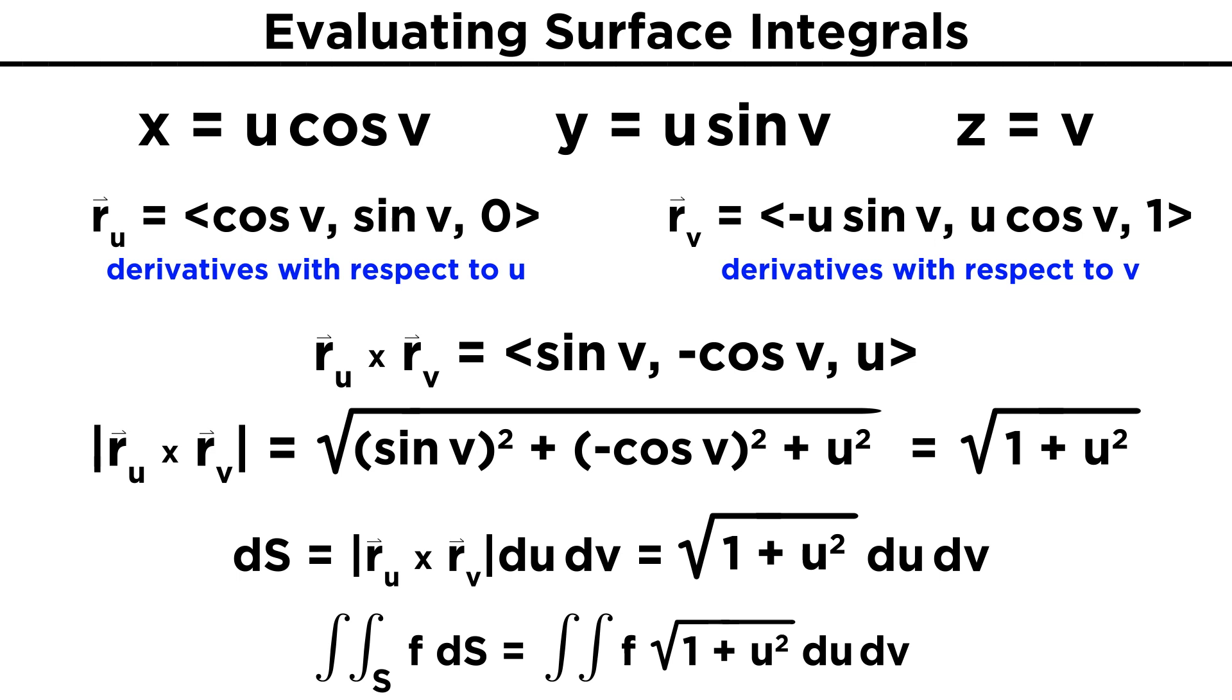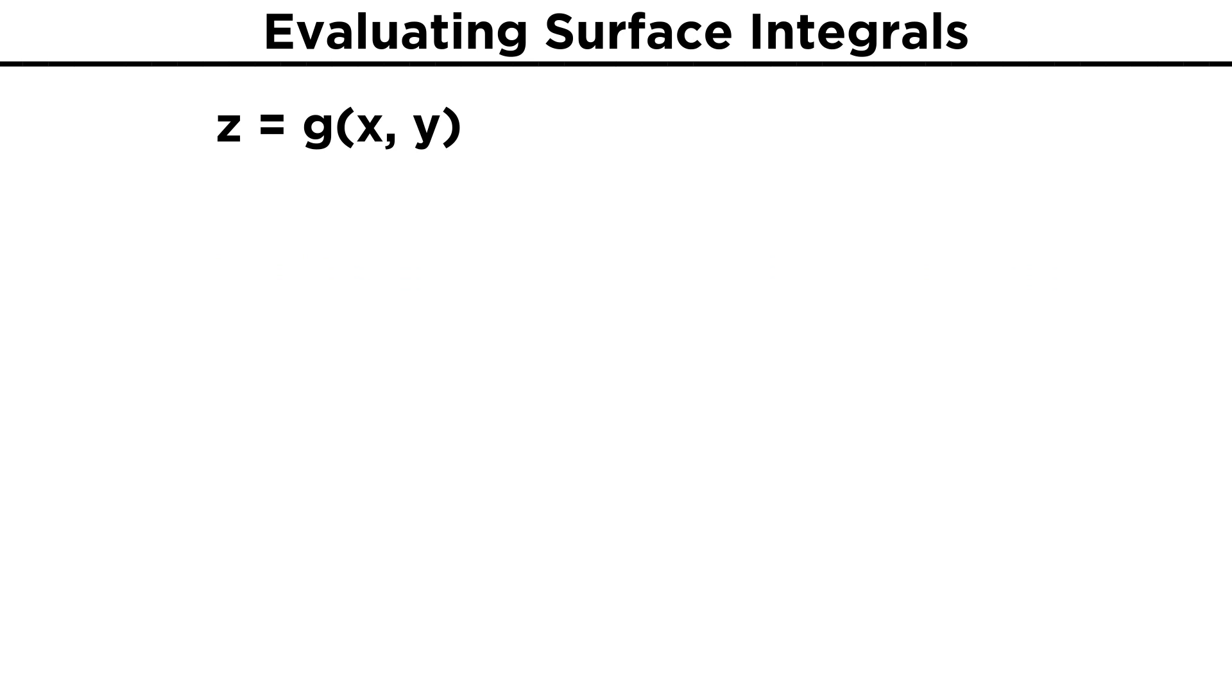This example illustrates how to set up the most general cases of surface integrals. However, there is a simplified case where the surface we are integrating over is only a function of X and Y, or in other words, Z equals g of X Y. For cases like this, X and Y serve as our parametric variables, and our surface can be represented by the vector R equals X, Y, Z of X Y.